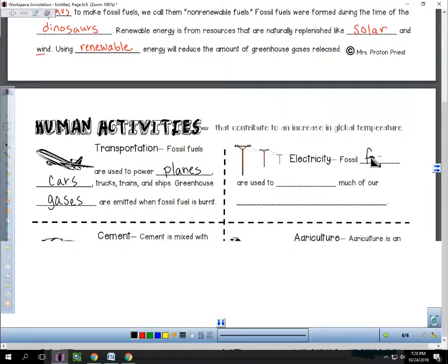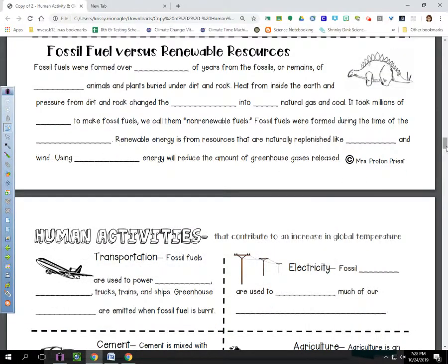Then we have electricity. With electricity, fossil fuels are used to create much of our electricity. We know here in Indiana, we get most of our electricity from the burning of coal.